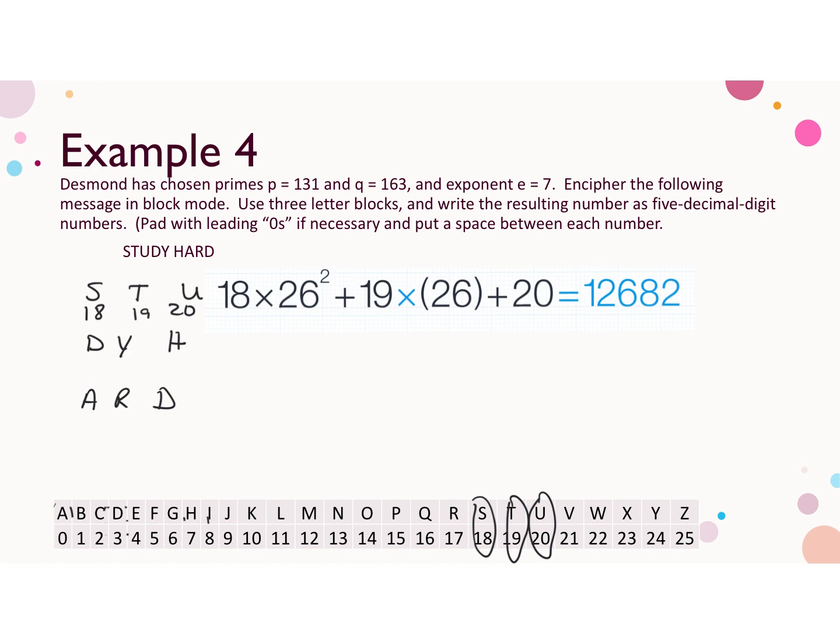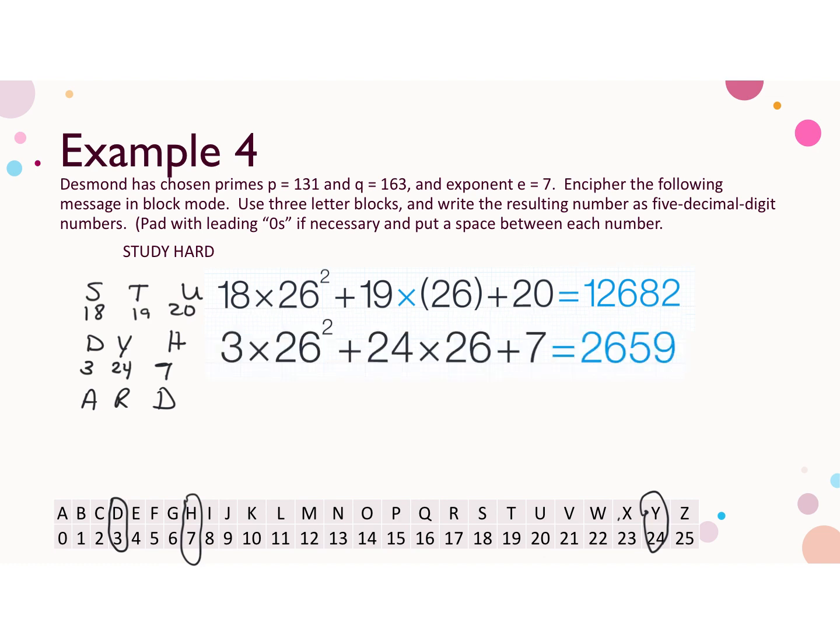Now we want to do the same thing with D, Y, H. D is 3, Y is 24, H is 7. We'll use those values to do our base 26 encoding. So we've got 3 times 26 squared plus 24 times 26 plus 7, giving us 2,659.